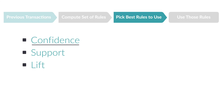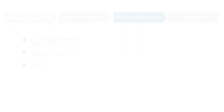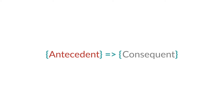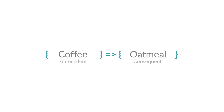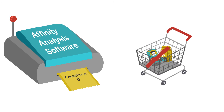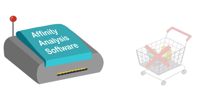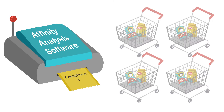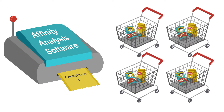Confidence measures just what it says — how confident are we that this rule will apply? The antecedent is the first part of our rule and the consequent is the second. For this example, consider this rule: if customers have coffee in their carts, they will also add oatmeal. Our affinity analysis software calculates a confidence measure for each rule as a number between zero and one. If the confidence is zero, there was never a transaction with both coffee and oatmeal. If the confidence is one, every transaction with coffee also had oatmeal. Generally, the higher the confidence, the more frequently these two items occur together.